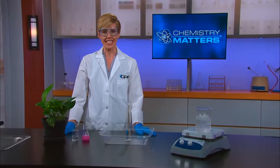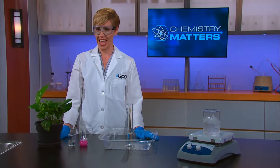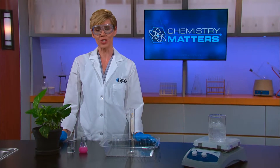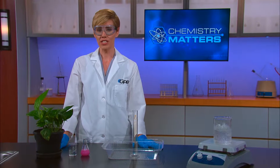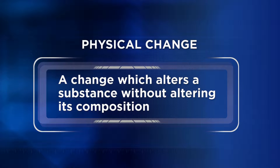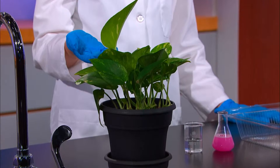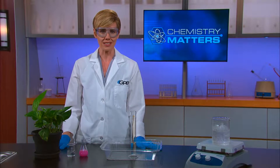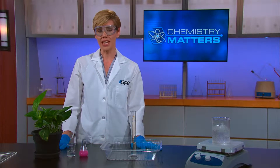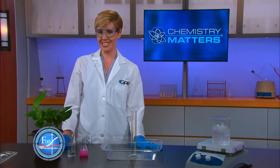Today we're investigating chemical reactions. What is a chemical reaction? We've already learned about chemical and physical changes in unit two. Physical changes alter a substance without altering its composition, like ice melting into water. A chemical change, on the other hand, is any change that results in the formation of a new chemical substance, like when water and carbon dioxide combine to form glucose during photosynthesis.